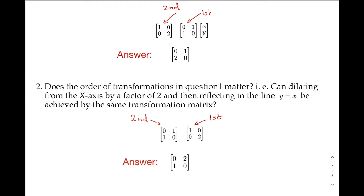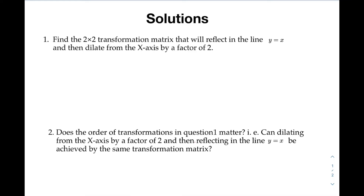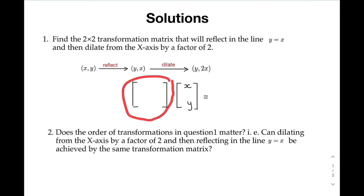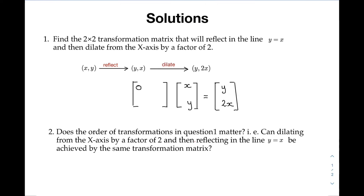Another way to tackle these questions is to consider the effect of the transformations on a point and leave the consideration of matrices till later. Now xy reflected in the line y equals x gives us yx, and then this point dilated from the x-axis by a factor of 2 gives us y and 2x. We ask ourselves what matrix will give us this result: 0, 1 in the first row gives us 0x's and 1y for the first entry, and 2, 0 gives us 2x's and 0y's for the second entry.